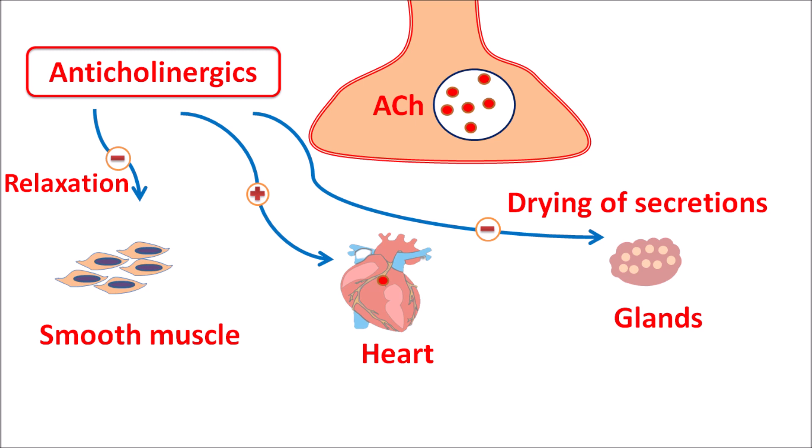In this way, anticholinergics produce relaxation of smooth muscle, cardiac stimulation, and drying of secretions. These effects may result in a few therapeutic actions, but many can also lead to adverse reactions. We will see the different side effects of anticholinergics and how to remember them with a simple code.